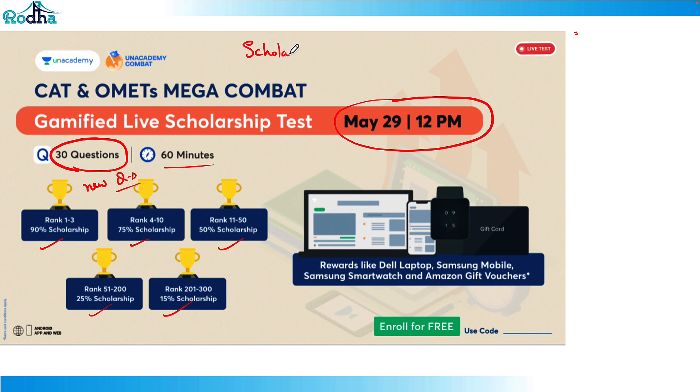Also many people get scholarships also. So more than hundreds of people get a scholarship on plus subscription. So you can give this test on May 29th at 12 pm, and if they ask for any code, you can use my code RAVIRODA there. So that's absolutely free of cost. You can give this test at 29th of May at 12 pm, thank you.